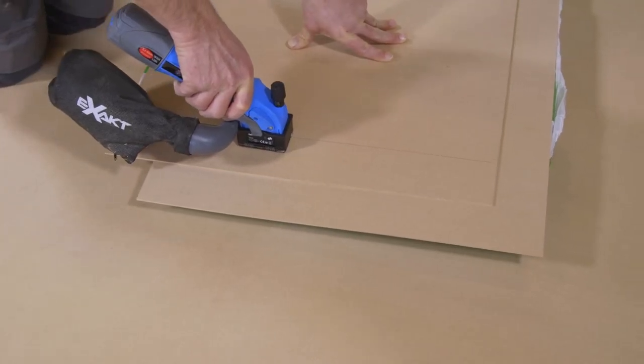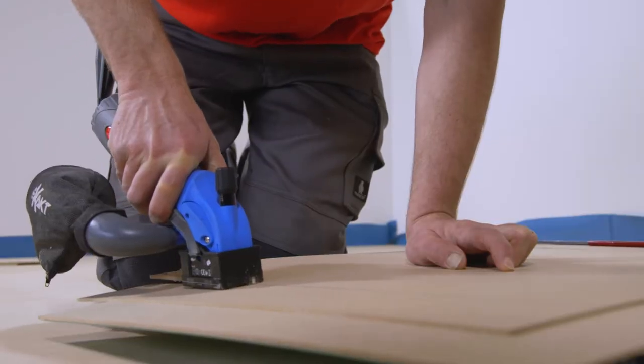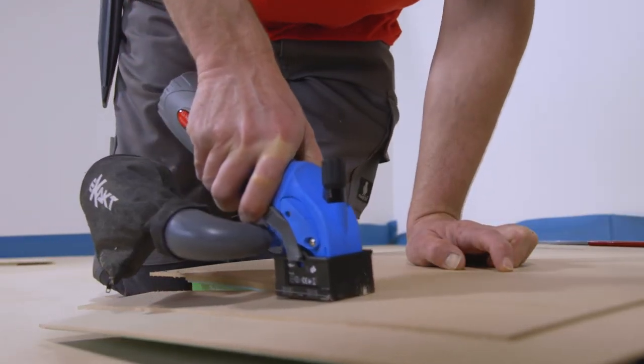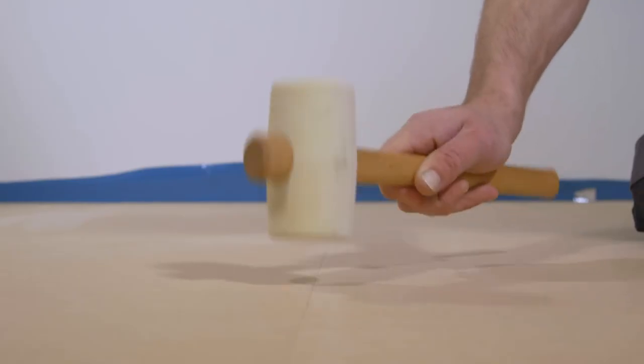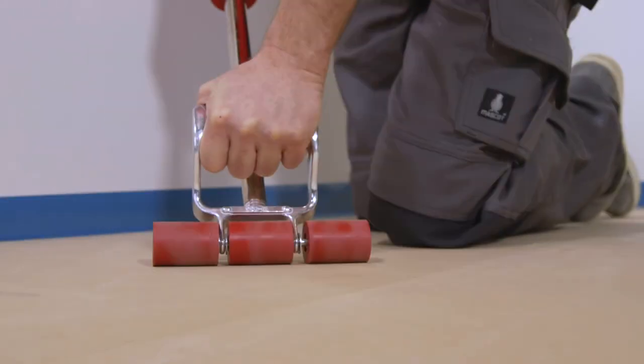FloorFixSmart can easily be cut with a knife or mini saw. Tap the overlap connection or use a hand roller.